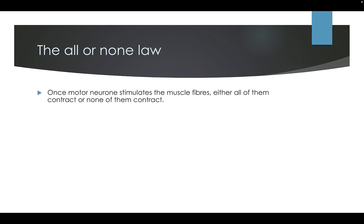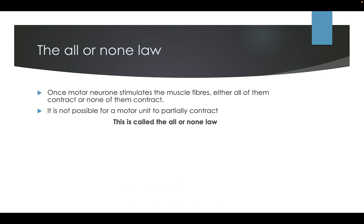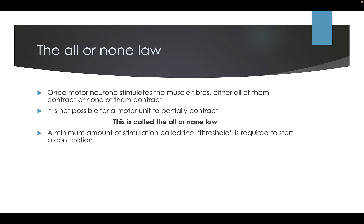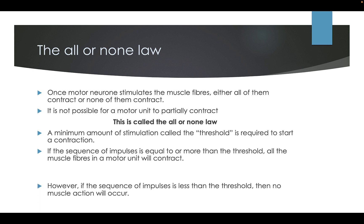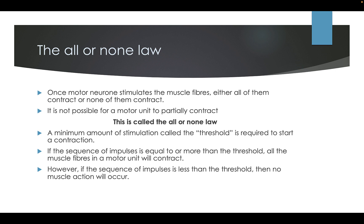Once a motor neuron stimulates the muscle fibres, either all of them contract or none of them contract — it is not possible for a motor unit to partially contract. This is called the all or none law. A minimum amount of stimulation, called the threshold, is required to start a contraction. If the sequence of impulses is equal to or more than the threshold, all the muscle fibres in the motor unit will contract. If the impulses are less than the threshold, no muscle action will occur and no movement will happen.